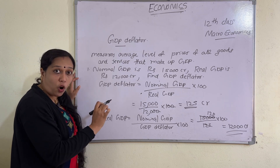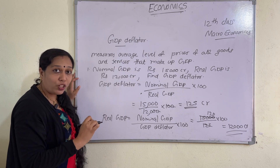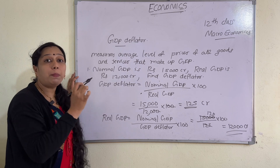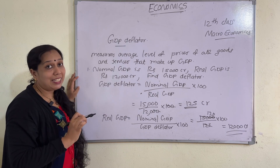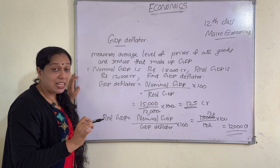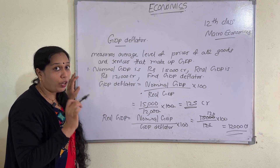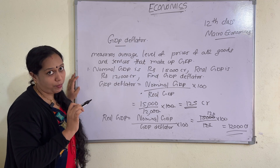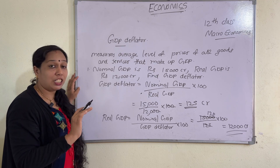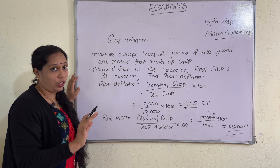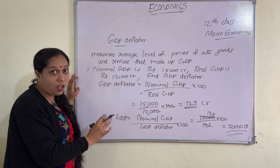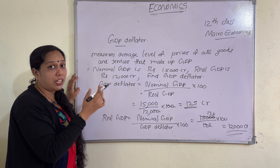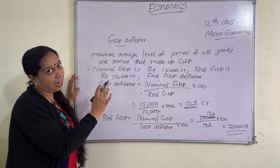So the formula to find out the GDP deflator is nominal GDP divided by real GDP, multiplied by 100. This is a sure exam question. You can write down this formula and practice many questions related to it.